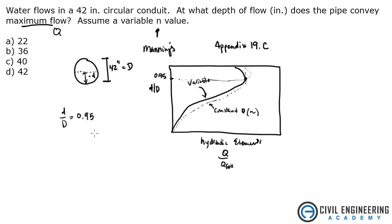Now all we need to do is solve for this. So let's solve for the depth. It's going to be 0.95 times big D is 42 inches. That gives me 39.9 or 40 inches, which is answer C.